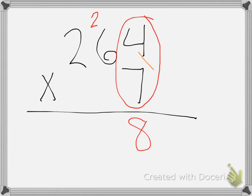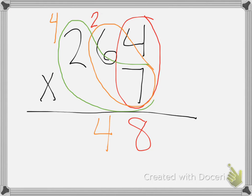Then, 7 times 6, 42 plus these two is 44. So I bring a 4 down and carry my 4 up here. My next step is to multiply 7 and 2, which is 14, plus 4 is 18. My answer is 1848.